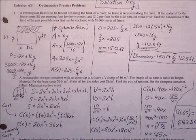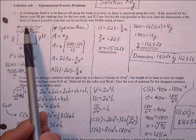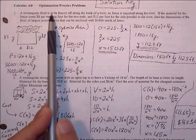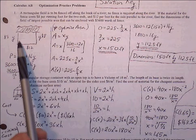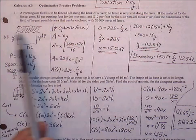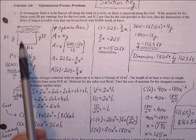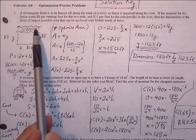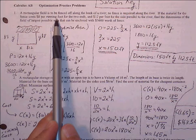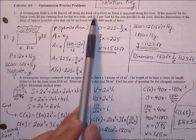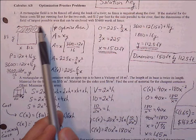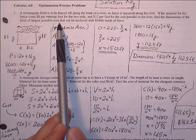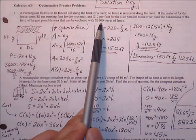This is the optimization practice problems worksheet. Let's look at number one. A rectangular field is to be fenced off along the bank of a river. No fence is required along the river, so just the three sides. The material for the fence costs $8 per running foot for the two ends and $12 per foot for the side parallel to the river. Find the dimensions of the field with the largest possible area that can be enclosed with $3,600 worth of fence.